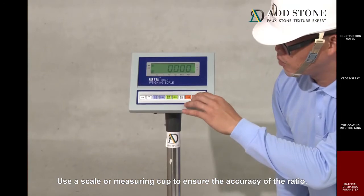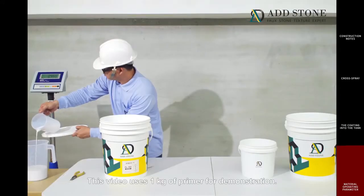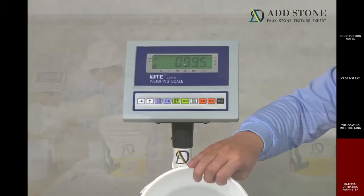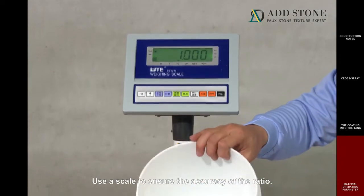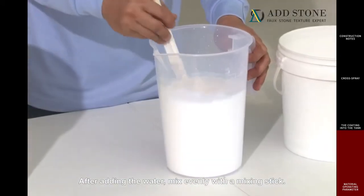Use a scale or measuring cup to ensure the accuracy of the ratio. This video uses 1 kg of primer for demonstration. Add drinking water by the ratio of 1 to 1. Use a scale to ensure the accuracy of the ratio. After adding the water, mix evenly with the mixing stick.